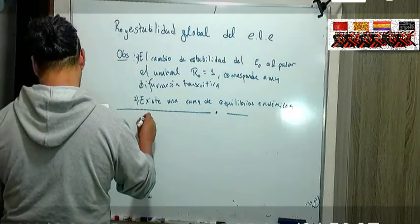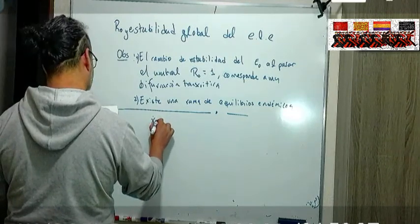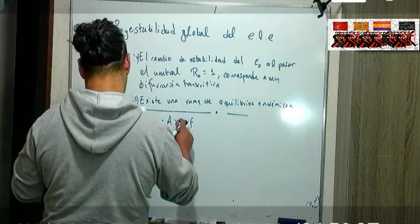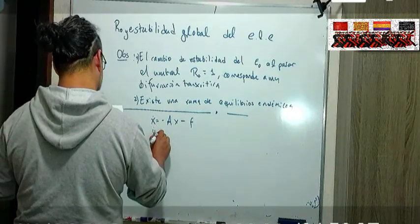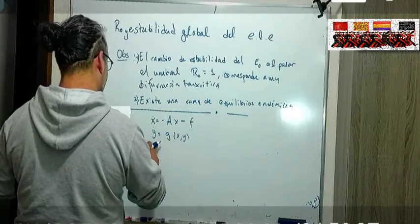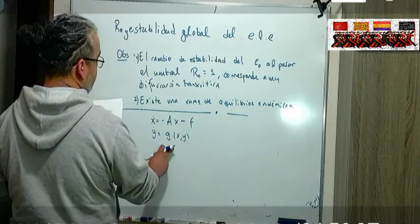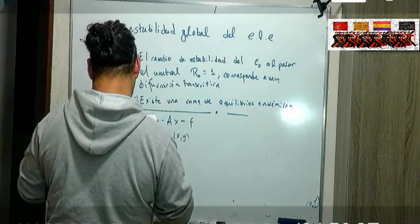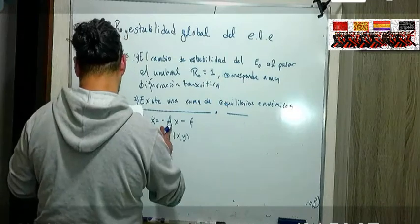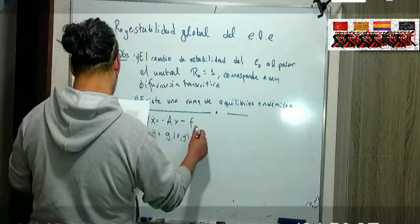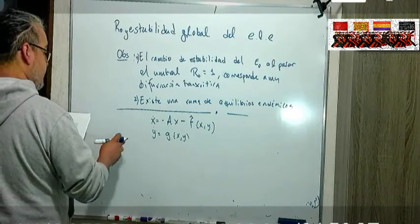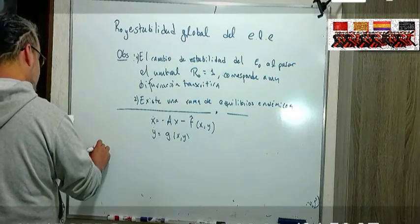Entonces otra vez vamos a pensar que podemos escribir un modelo de esta forma con las X las variables de... como ya lo habíamos comentado, la Y las variables en Y van a ser una función continua para todos los... las cajitas de nuestro modelo y esto lo podemos linealizar, tiene una parte lineal y una parte típicamente no lineal.